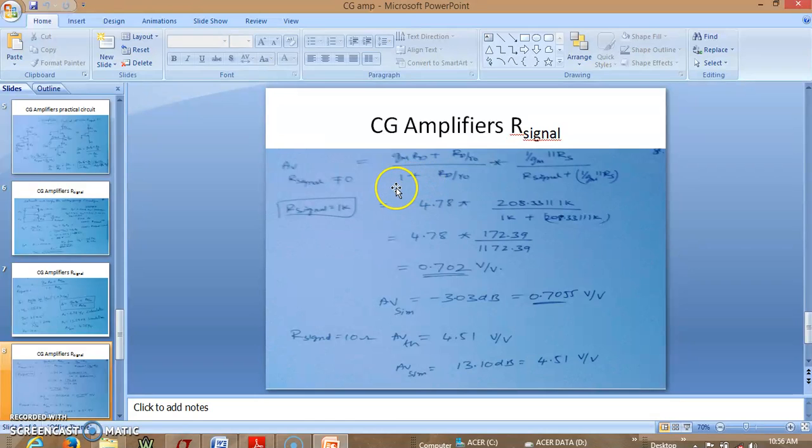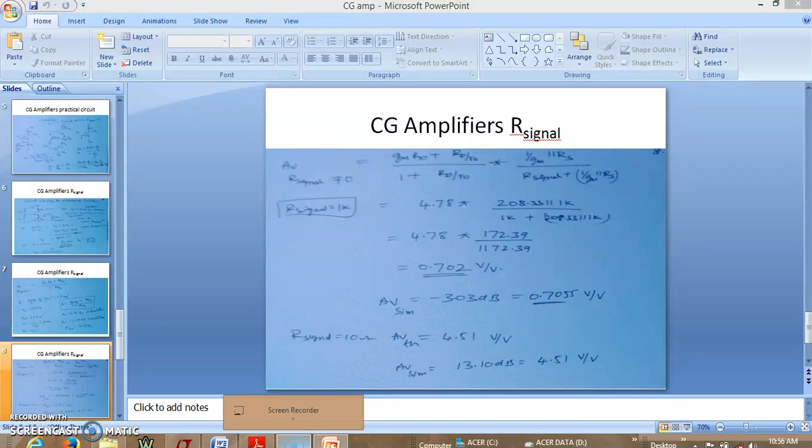So the r signal will actually make your gain reduce. Now since r signal is 1 kilo ohm, if you actually calculate the gain of the circuit it was coming out to be 0.702. Now you can see the gain is reduced too much and it is less than 1 and we have actually verified that in simulation also by editing the source resistance.